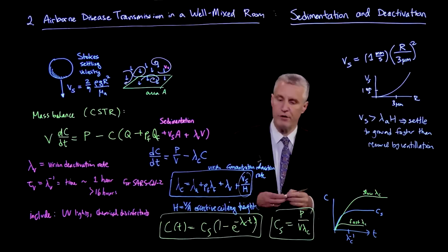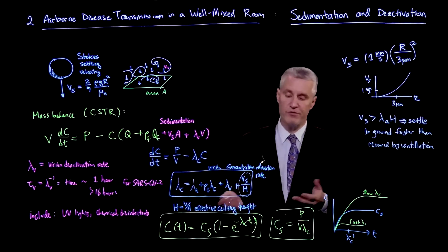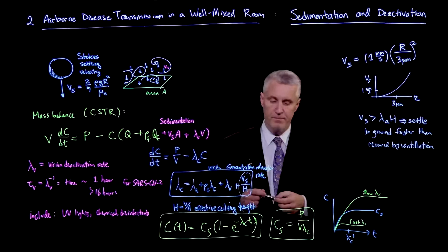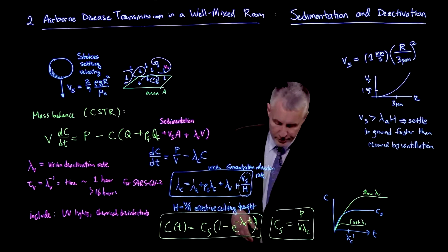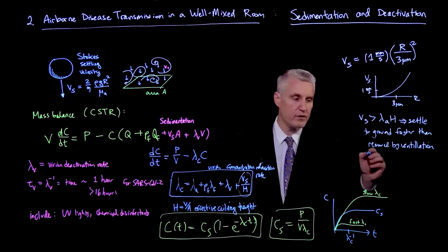So in particular, if Vs is bigger than lambda_a times h, then those droplets will settle to the ground, or to maybe the tables or other flat surfaces, faster than removal by ventilation. So those are really the droplets that will sediment out, actually.